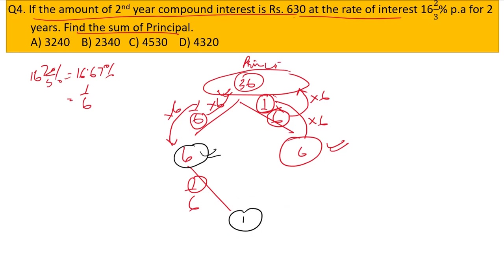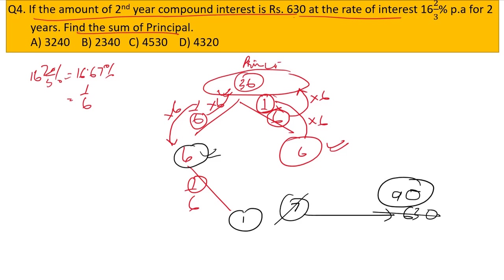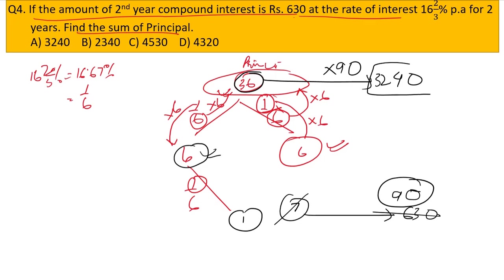The second year compound interest of 7 units equals rupees 630. So 1 unit = 90. Therefore the principal of 36 units = 36 × 90 = 3,240. The principal is rupees 3,240. This is option A.